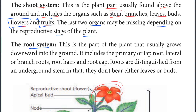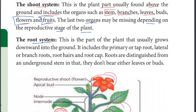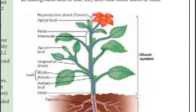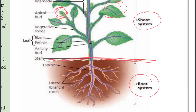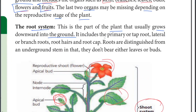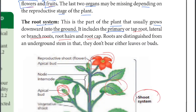The root system is the part of the plant that usually grows downward into the ground. It includes the primary or tap roots, lateral or branch roots, root hairs, and root cap.